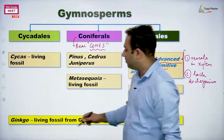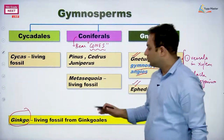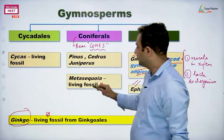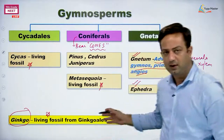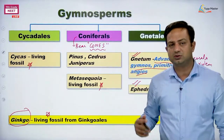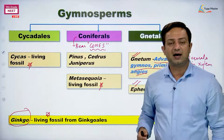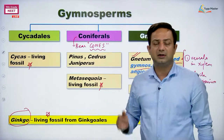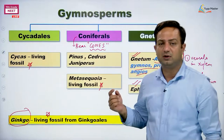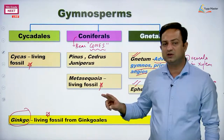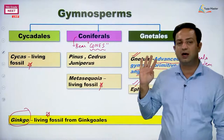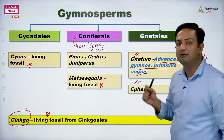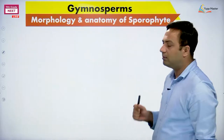Ginkgo from the order Ginkgoales is another living fossil. So living fossils discussed so far are: archaebacteria, Equisetum, Cycas, Metasequoia, and Ginkgo — note all these examples together. Next we move to morphology and anatomy.